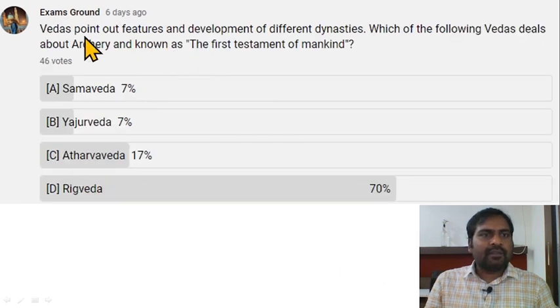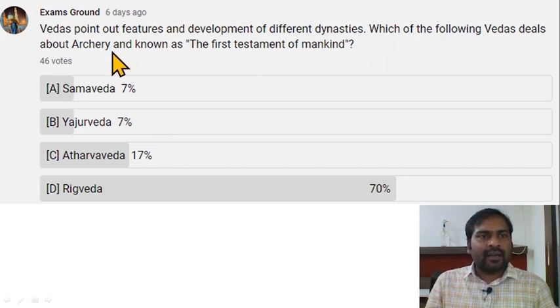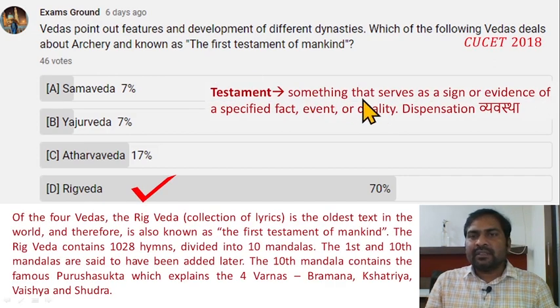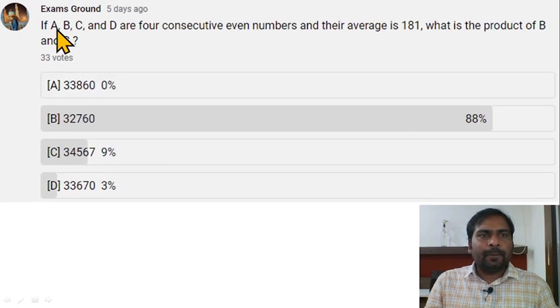Now the general part. Vedas point out features and development of different dynasties. Which of the following Vedas deals about archery and is known as the first testament of mankind? Testament means something that serves as a sign or evidence of a specified fact, event, or quality. Of the four Vedas, the Rig Veda is the oldest text in the world and therefore is also known as the first testament of mankind. The Rig Veda contains 1,028 hymns divided into 10 mandalas.